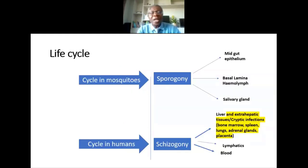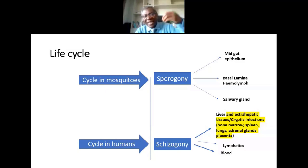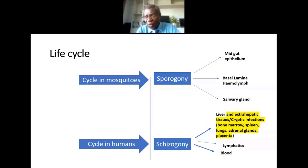Going back to the life cycle: once sporozoites have been inoculated into humans, the extra-hepatic tissues sustain cryptic infections. The key tissues now known to harbor these are the bone marrow, the spleen, the lungs, the adrenal glands, and the placenta.